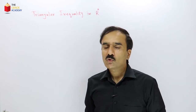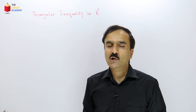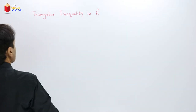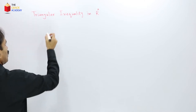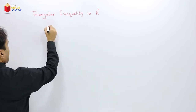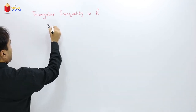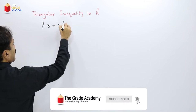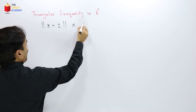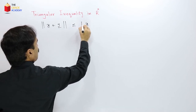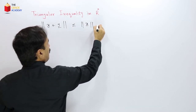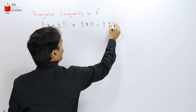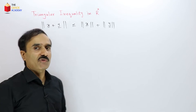Today we are going to prove the triangular inequality, which is: for any two vectors belonging to Rⁿ, the norm of x plus y is less than or equal to the norm of x plus the norm of y. This is the triangular inequality.